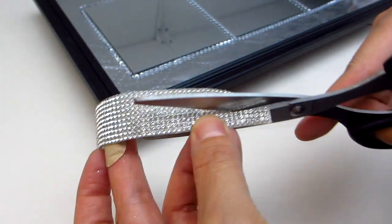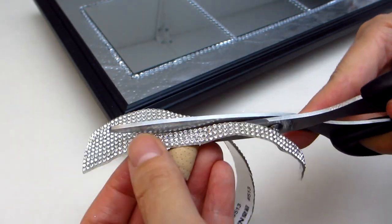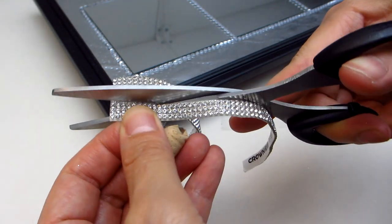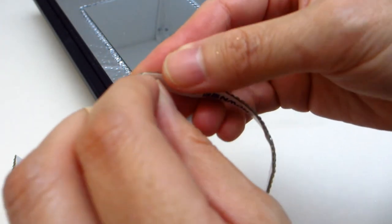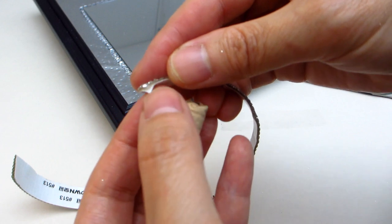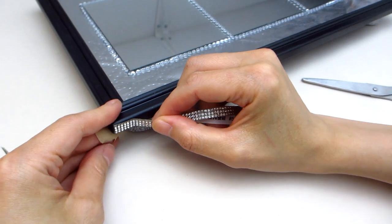Next, I go in with some rhinestone ribbon to further bling out the tray. This rhinestone ribbon is optional, but I think it really amps up the bling factor for our tray. And for those of you wondering, I found this rhinestone ribbon on Amazon. It can be cut to size and already comes with a very sticky adhesive backing so no extra glue is required.